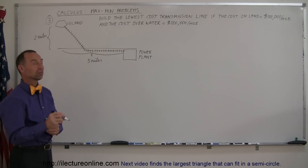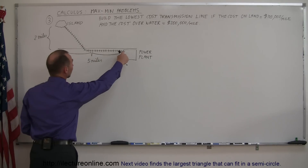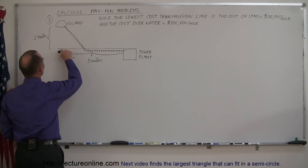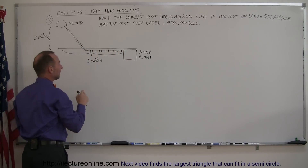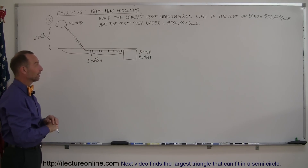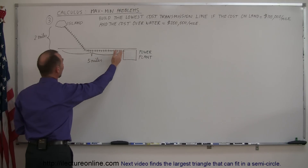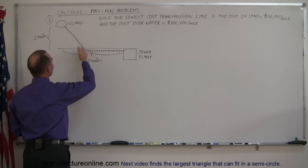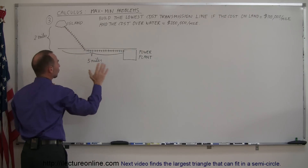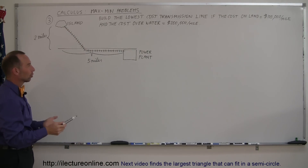The initial inclination might be to build the transmission line all the way to the closest point to the island and then cross over water, but you'll find out that's not necessarily the lowest cost option. The lowest cost is probably when you go a certain distance over land and then start crossing over water, so the total length — and therefore the total cost — is as small as possible.